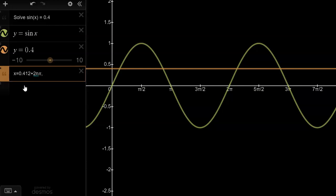As well, x could also be 2.73, so we could go 2.73 plus multiples of 2π.